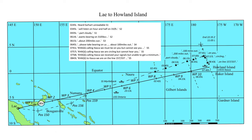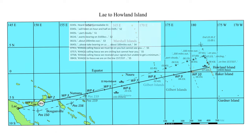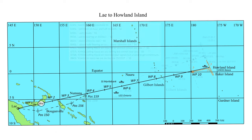Clearly, if they had continued south, they would have seen the ship smoke. But on the approach, their mental picture was that they were close to on track and they could not commit to one direction only — they had to search north and south.